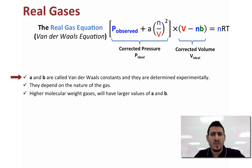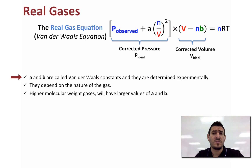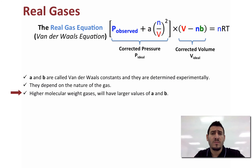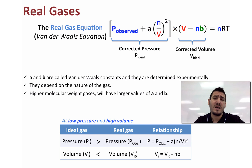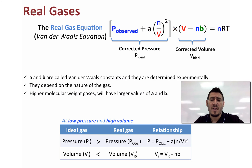Note that a and b are called van der Waals constants and they are determined experimentally. They depend on the nature of the gas, and the higher the molar mass of the gas, the larger the values of a and b. At low pressure and high volume, the pressure of the ideal gas is greater than the observed pressure of a real gas, and the volume of the ideal gas is less than the volume of the real gas.